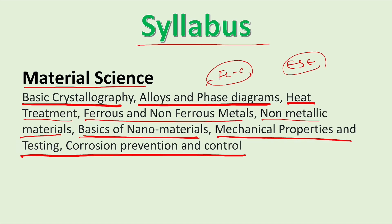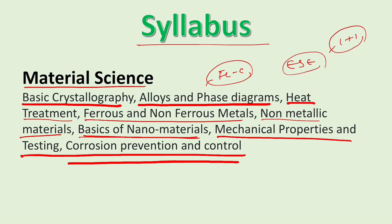Basics of nano material and corrosion prevention and control are in engineering services. So I will give only one question from nano material and one question from corrosion prevention and control, because this exam is mainly for ESE plus GATE. Those who are only preparing for GATE — please note we have not studied these topics deeply, so just cover the basics. You do not have to go deep into nano material and corrosion prevention and control.